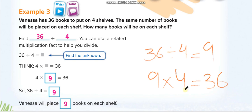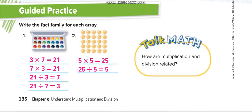Now look at this array: how many rows? One, two, three — three rows. How many columns? One, two, three, four, five, six, seven — seven columns. So three times seven equals twenty-one. You have to write the fact family in four sentences — two multiplication and two division: three times seven equals twenty-one, seven times three equals twenty-one, twenty-one divided by seven equals three, and twenty-one divided by three equals seven.